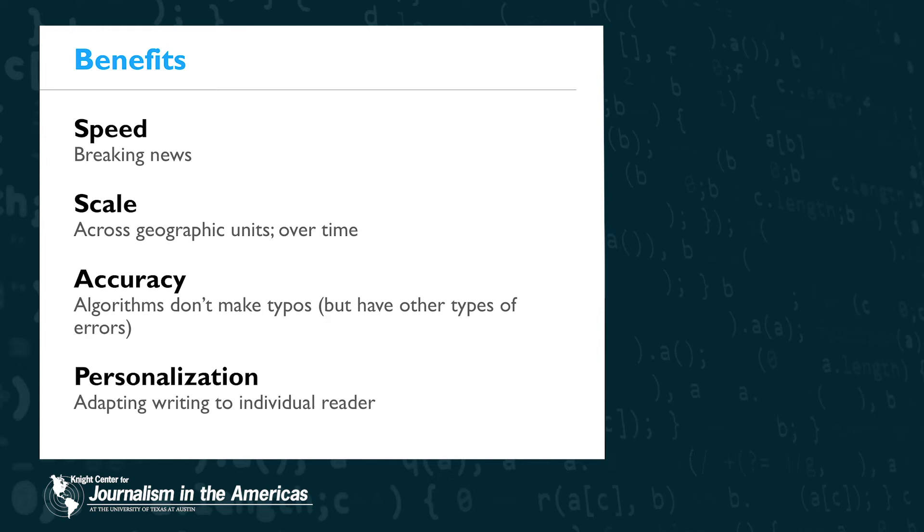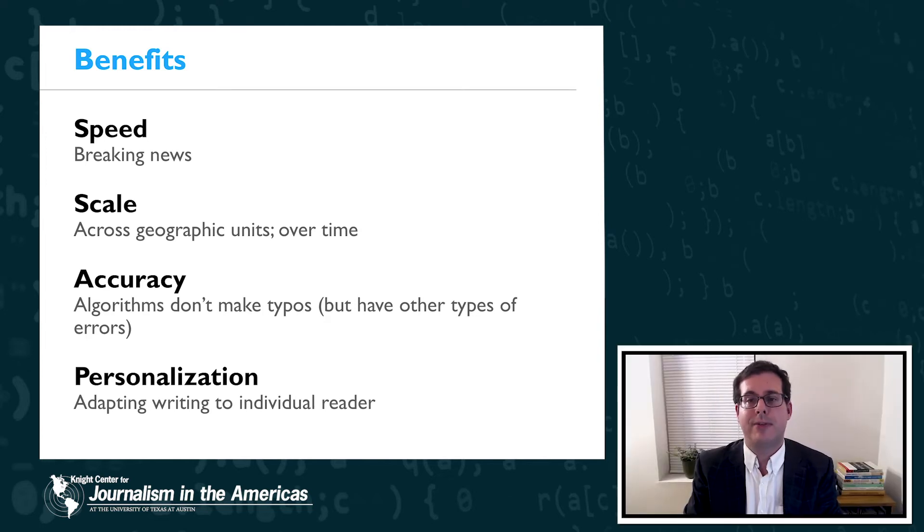So let's jump right in here. These are the four main benefits of automated content: speed, scale, accuracy, and personalization.